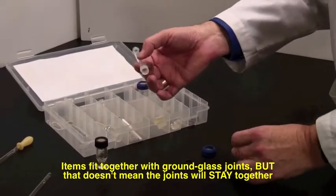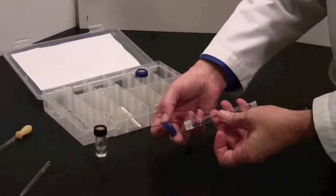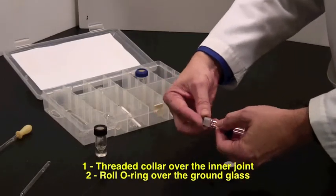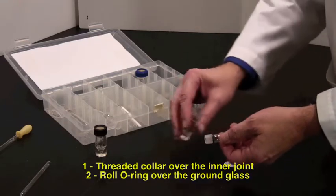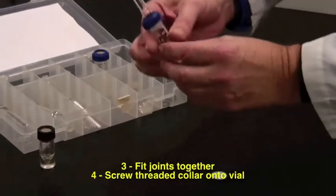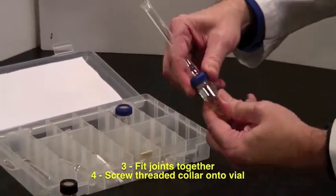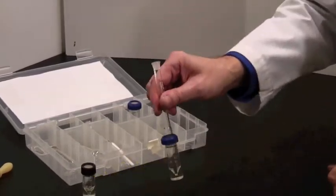This is actually an air condenser, and I'll show you how that fits on. You first of all put the threaded ring over the inner joint. Take the o-ring and roll it to just past the ground glass connector, and then fit one into the other. You then screw the threaded ring tight. It will compress the o-ring and form a tight seal.